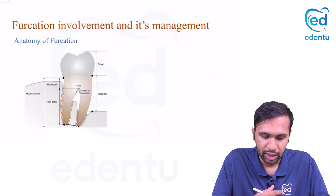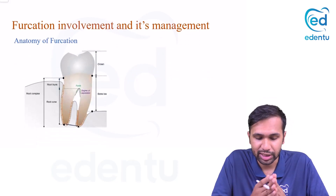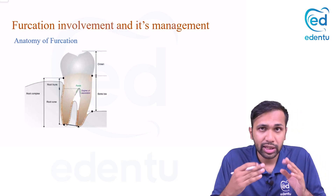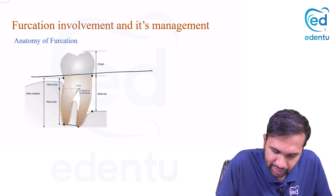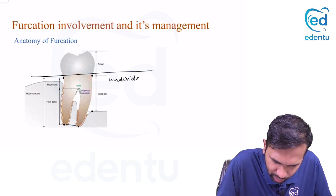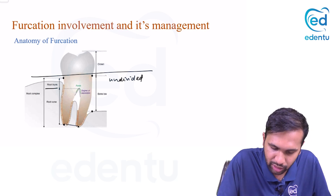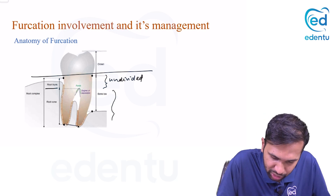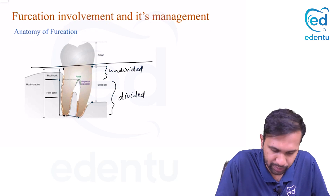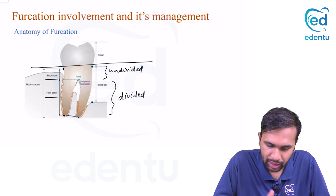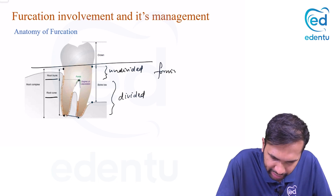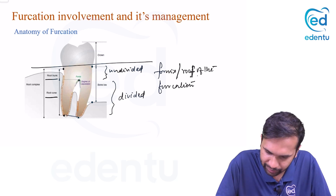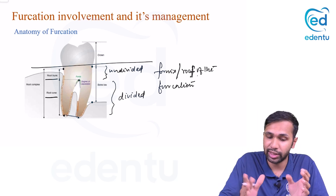Any question related to furcation should start with this diagram. We are more interested in the root portion. The undivided portion of the root is referred to as the root trunk. The divided portion — where the root starts to divide — is called the fornix or roof of the furcation. The angle at which the roots are separating is called the degree of separation.